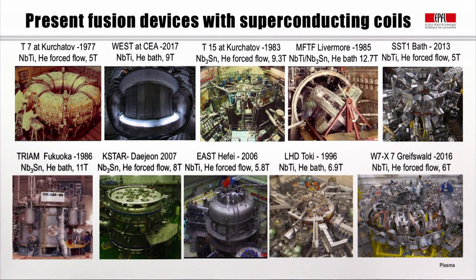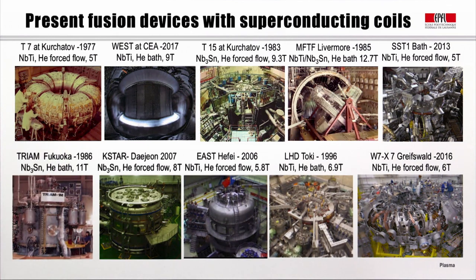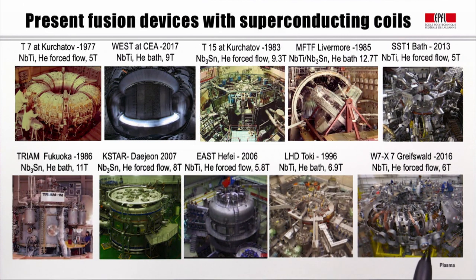Several fusion devices already use superconducting coils. Starting from T-7, built in 1977 at Kurchatov in Russia going up to 5 Tesla with NbTi coils, to the most recent WEST facility at CEA in France employing NbTi up to 9 Tesla, and others including EAST in China, K-STAR in Korea, and the superconducting stellarator Wendelstein 7-X going up to 6 Tesla with NbTi and forced-flow helium cooling.